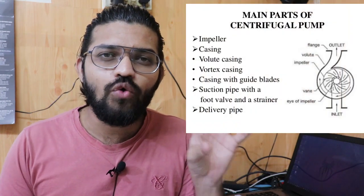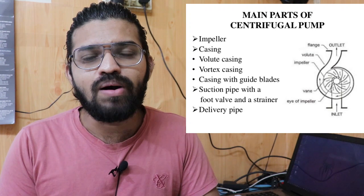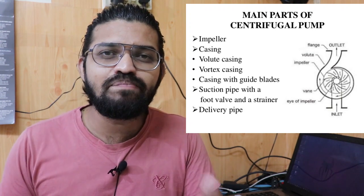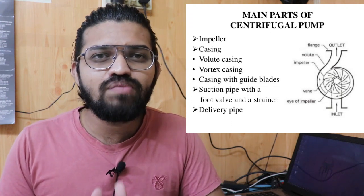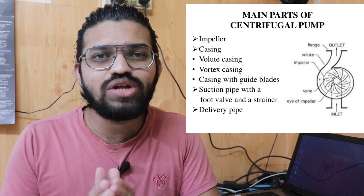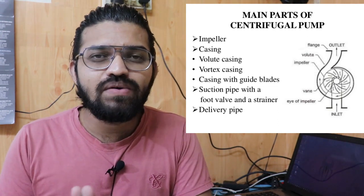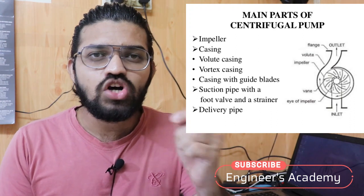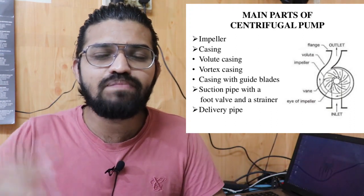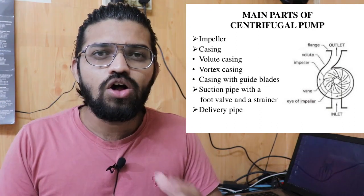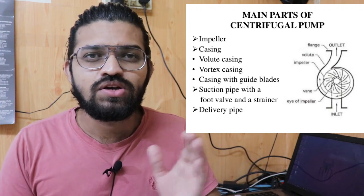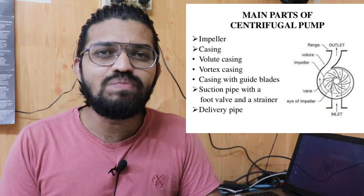The centrifugal pump consists of five main parts: the impeller, which is the heart of the pump; the involute casing, which acts as a protective cover; a suction pipe at the center; a delivery pipe at one side of the involute casing; and a driving motor connected to the impeller.